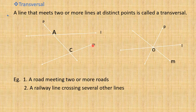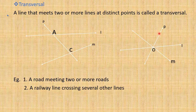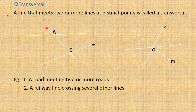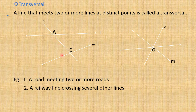Also important in the definition of a transversal is the concept of distinct points. In the second figure, line P meets line L and M not at the same point. P meets line L at A, and P meets line M at C. So A and C are not the same point — they are different points. So P meets lines L and M at distinct, separate points. That is why P is called the transversal. To summarize: it should meet a minimum of two lines, and these points of intersection should be different.